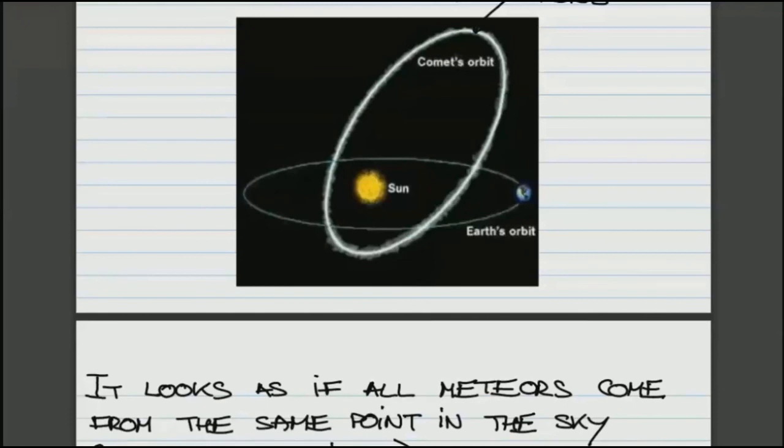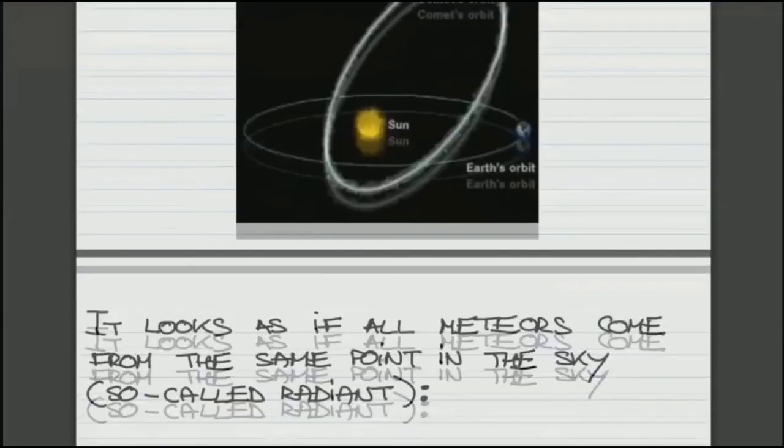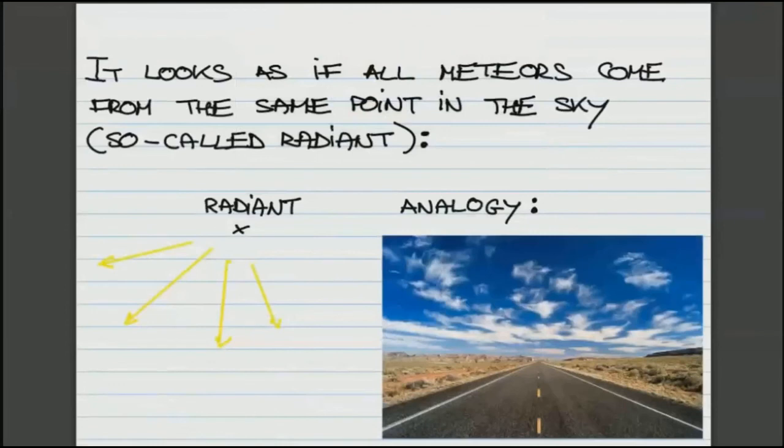So as I said earlier, it looks as if during the shower, all meteors come from the same point in the night sky, so-called radiant. But that's an illusion. In fact, their trajectories are parallel. And because they come from the great distance, it looks to us as if they are coming from the same point in the sky. You can understand that through an analogy.